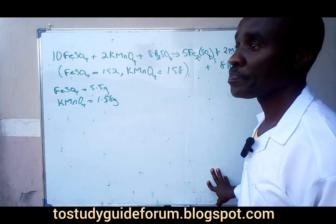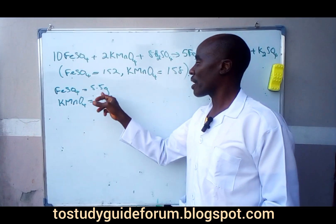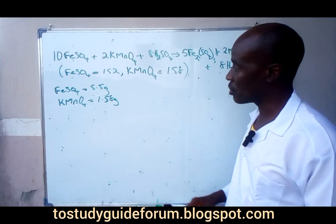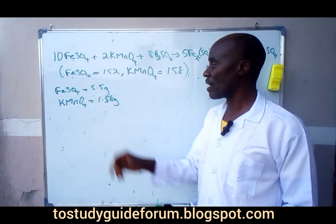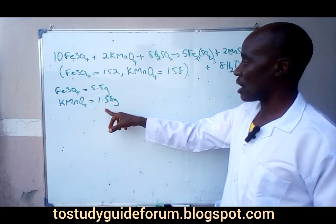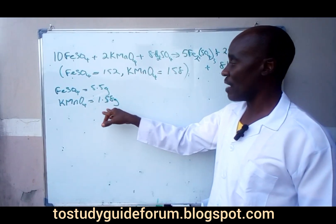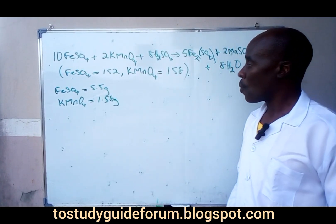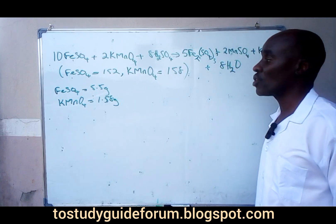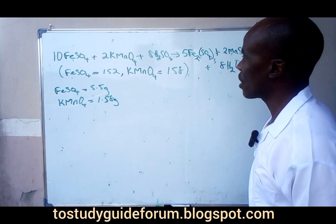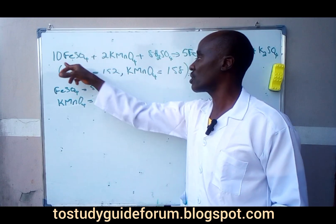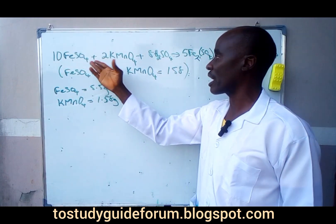In this question, we are given iron(II) tetraoxosulphate, worth 5.5 grams, and potassium permanganate at 1.5 grams. Based on this, the first thing we are going to do is look at the chemical equation and find out the stoichiometric relationship between them.